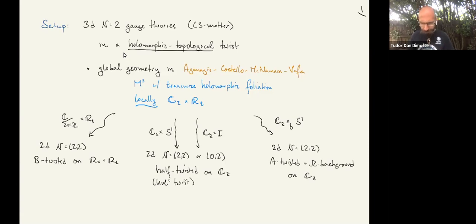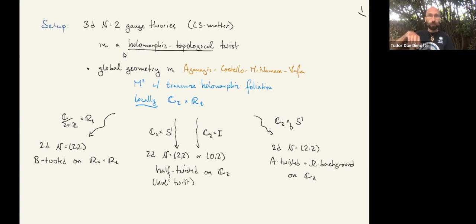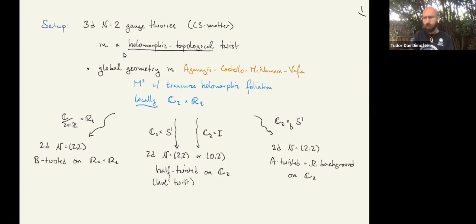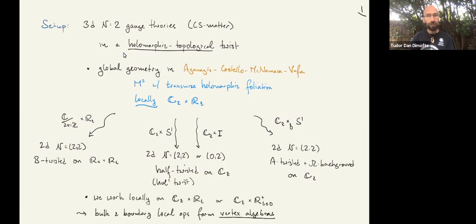The other relation to familiar things involves compactifying with an angular momentum background where the holomorphic direction is fibered non-trivially over S1. That leads to an A-twist in Omega background in two dimensions. There are connections with that direction as well, but that's ongoing work.